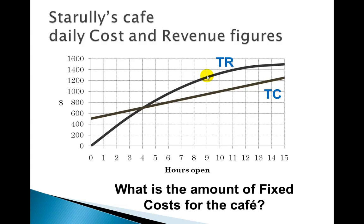Another question is: how much is the fixed cost for the cafe? Fixed costs are those costs before we even open up, before we do any sales. It basically does not matter how much we produce or how many lattes I make — your fixed costs are right here at zero. At time zero, there's my fixed cost. It's the Y-intercept, the Y value at zero before we produce or do anything. I'm estimating that to be somewhere around $500.